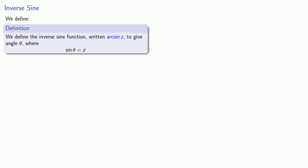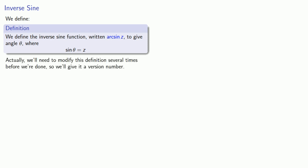Let's get into the mind of a mathematician — don't worry, it's not too scary a place — and define the inverse sine function, which we'll write as arc sine z, to give the angle theta where the sine of theta is equal to z. We'll need to modify this definition several times before we're done, so we'll give it a version number. We'll call this version 1.0.